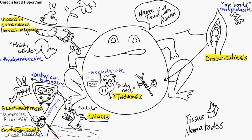It has three signs: duodenitis, which is the intestinal phase with diarrhea; vasculitis, which migrates through the blood vessels; and myositis, which is the encysting phase. You've got to treat with albendazole or mebendazole with corticosteroid.